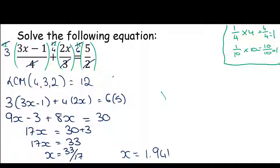If I had one tenth of a pizza I'd need 10 pieces to make it whole. So the denominator is telling us what we need to multiply by to get rid of the fraction. If I multiply across by 4 I'll get rid of the first fraction but not the other two, so I'd need to multiply by 3 and then by 2 as well — that's three separate multiplications. To speed this up we look for the lowest common multiple of 4, 3, and 2, which is 12 — the same as a common denominator.